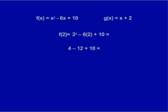Let's also say that we're given g of x equals x plus 2. If I wanted f of 2, I simply substitute 2 for x in every part of the equation. So I get f of 2 equals 2 squared minus 6 times 2 plus 10, which would be 4 minus 12 plus 10, giving me 2.